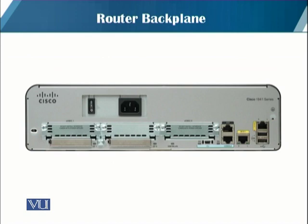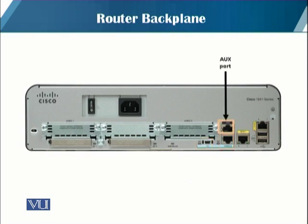Now let's look at the router backplane — the types of ports and interfaces available. We have console ports, of which there are two types: a USB mini type B console port and an RJ45 console port. We also have an auxiliary port, which is an RJ45 port used for remote management access, similar to the console port, for initial configuration and command-line interface management access.